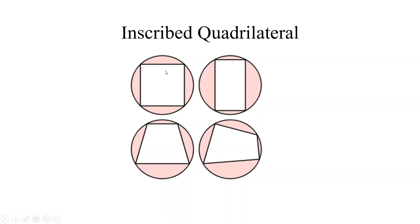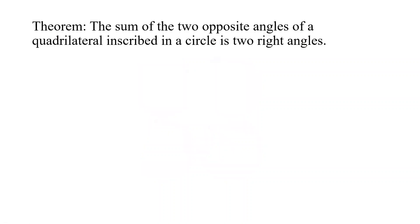It is obvious in square and rectangle. Also, if you measure in this figure, opposite angles are 180 degrees, and in this figure also the sum of opposite angles is 180 degrees. Now I will discuss a theorem. Theorem statement: the sum of the two opposite angles of a quadrilateral inscribed in a circle is two right angles.